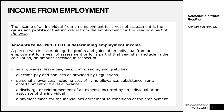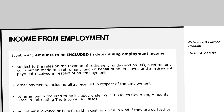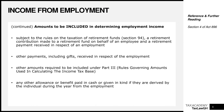The next item is a payment made for the individual's agreement to conditions of employment. This means that if within your employment contract there is any other payment specified by the contract, you need to add those payments to the amount to be taxed.